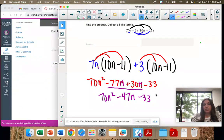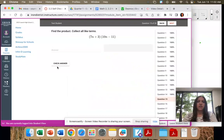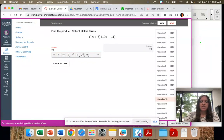The n squared and the constant negative 33 don't have any terms to combine with, so they stay. That's our answer: 70n squared minus 47n minus 33.